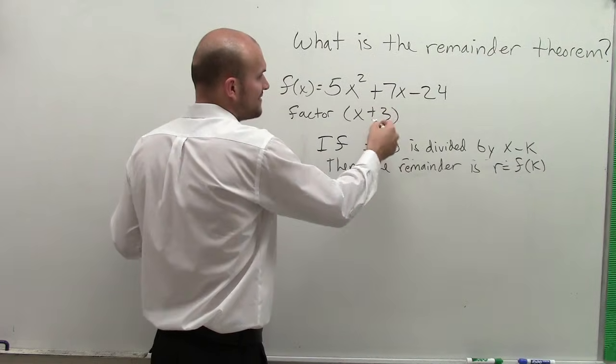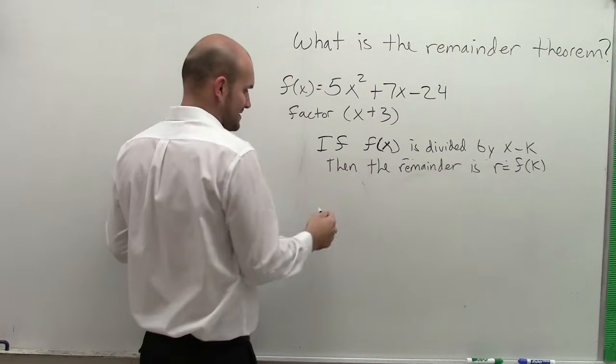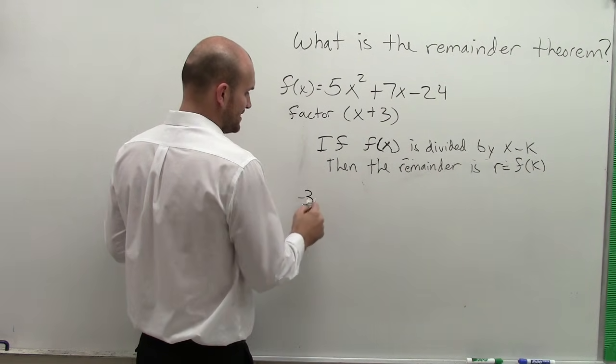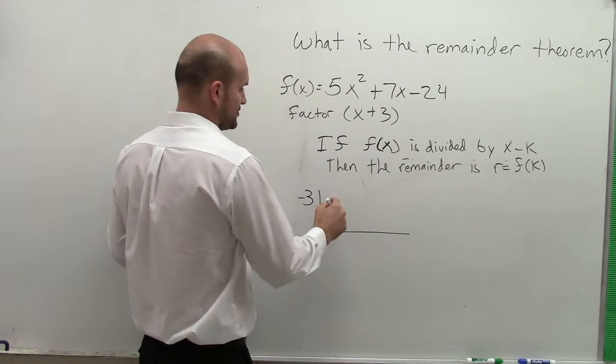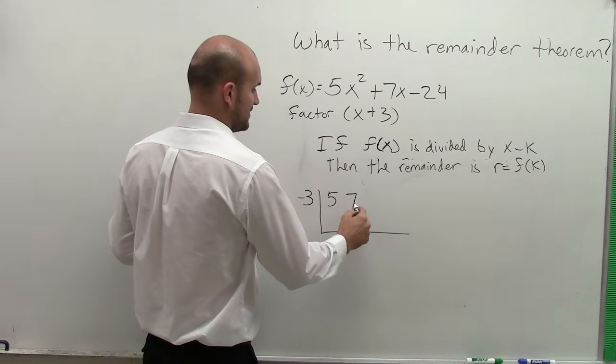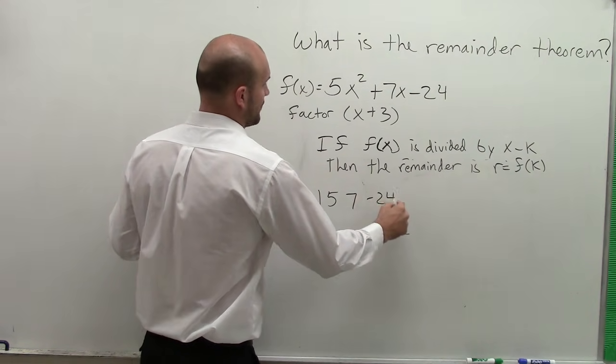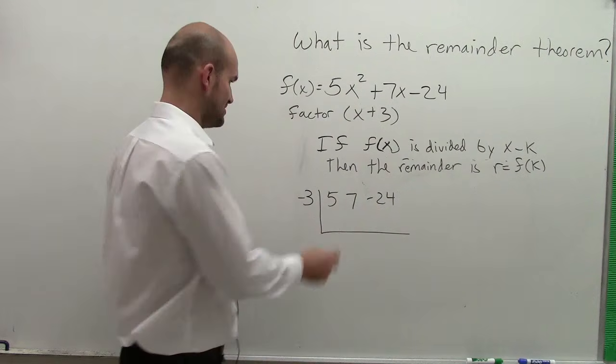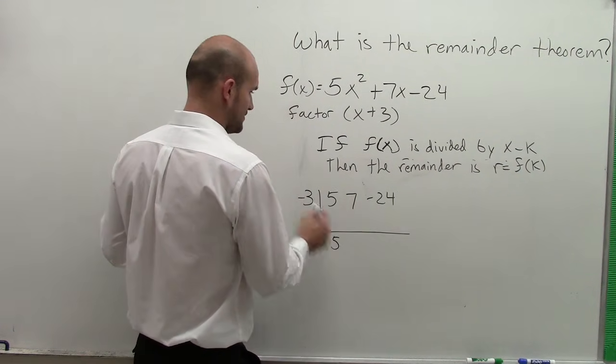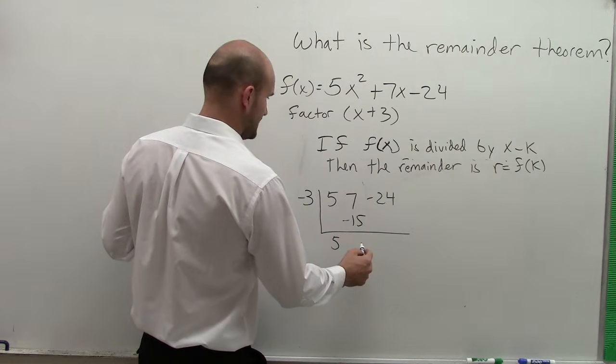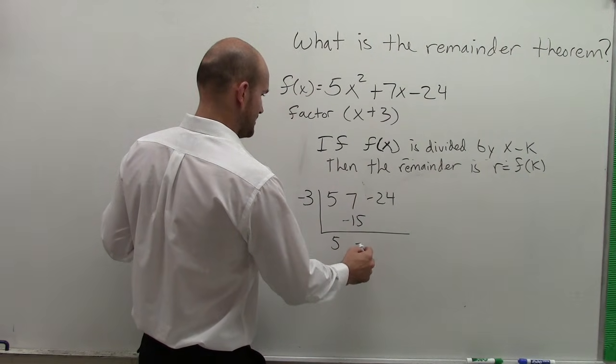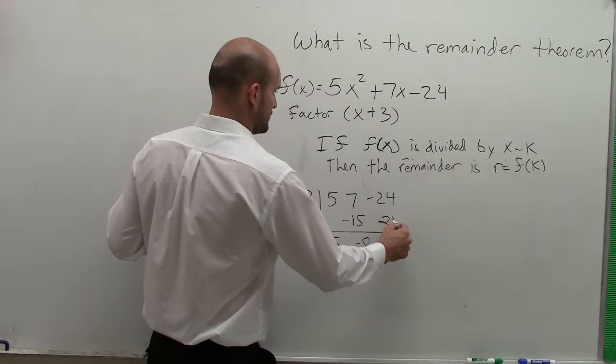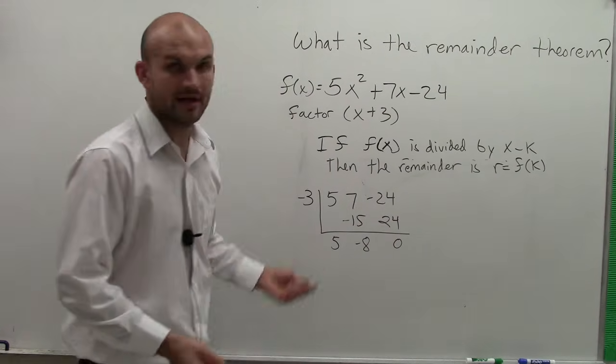So what I mean by all that is, let's say I divide this into this. So to use synthetic division, I'll do 5, 7, and negative 24. So if I divide this into it, what I get is drop down 5, negative 15, that becomes a negative 8, 24, 0.